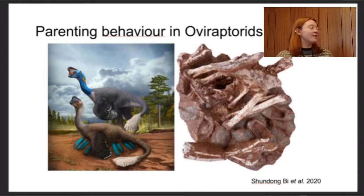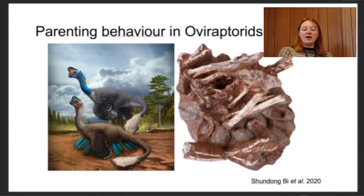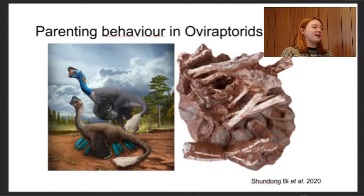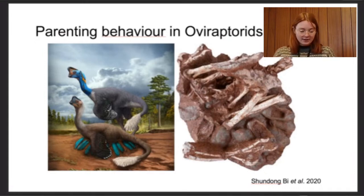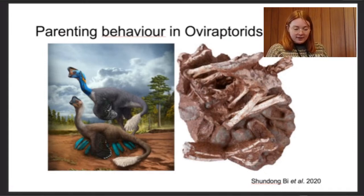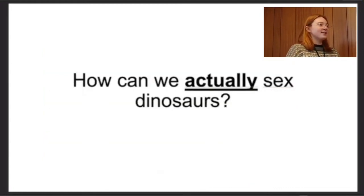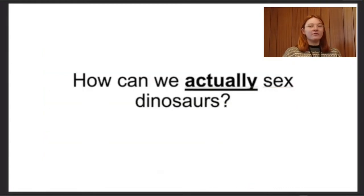Oviraptors have been found on their nests with eggs beneath them, leading some people to think this could indicate a female — a mother tending her eggs. But we see a lot of biparentalism in modern birds, so what's to say this couldn't also be a male tending the clutch?